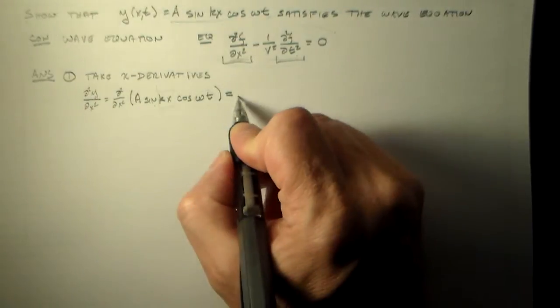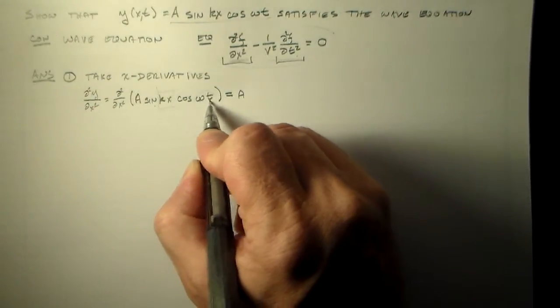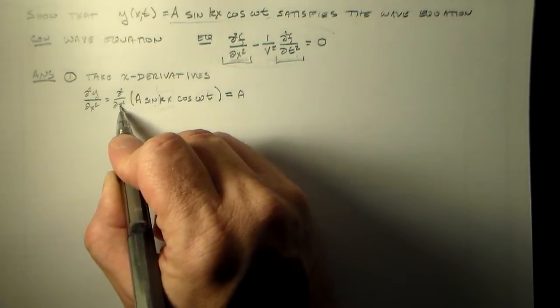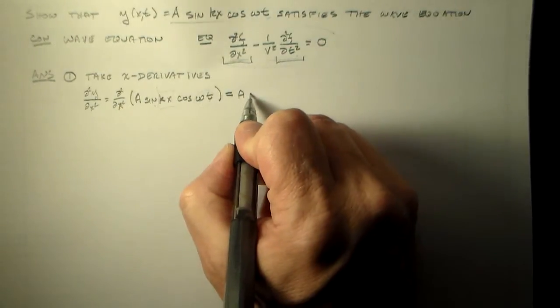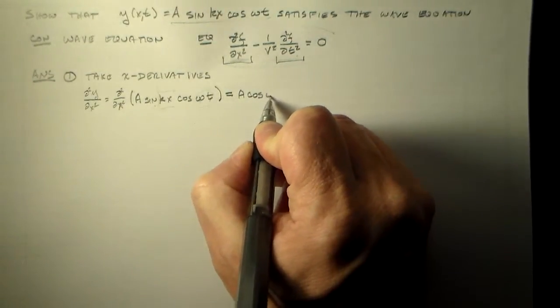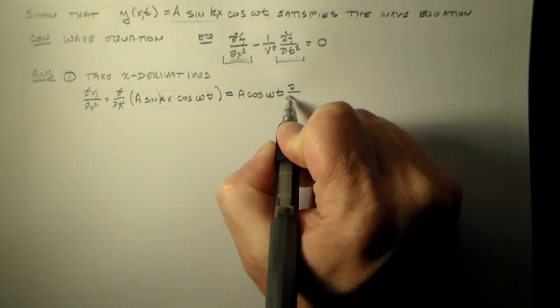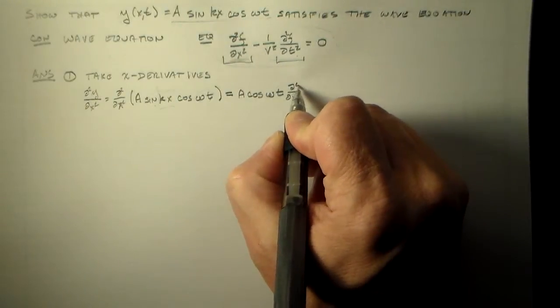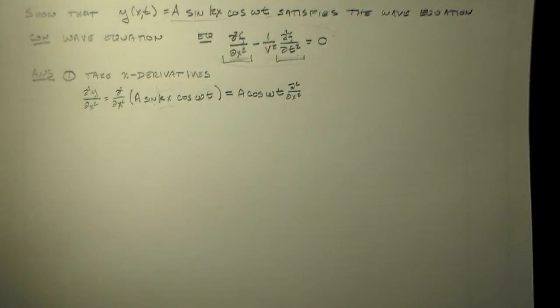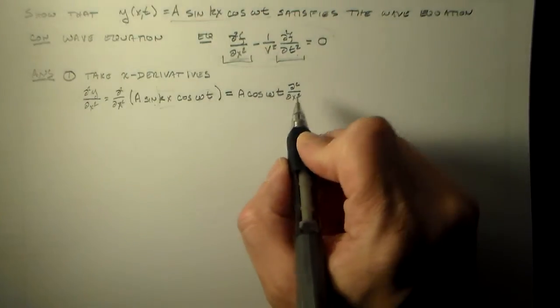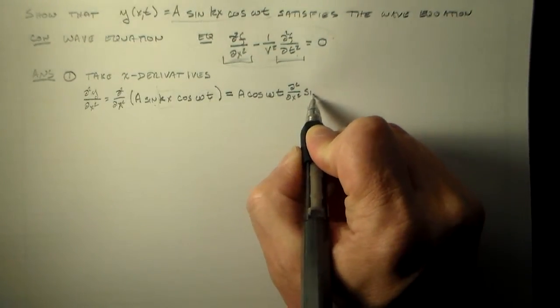A comes out, and it turns out omega t has no explicit x dependence. This is a partial differential equation, so it has no explicit dependence on x. It comes out. And then we have our leftover d squared dx squared times the sine kx, or of the sine kx.